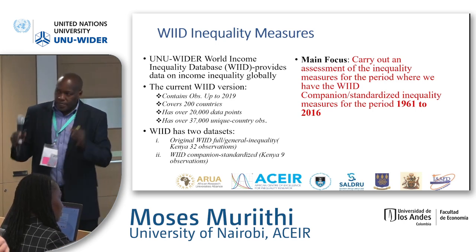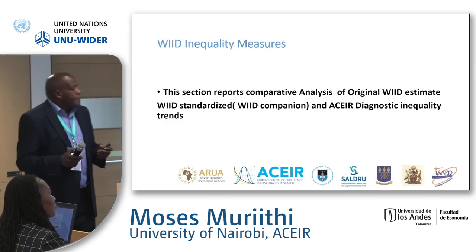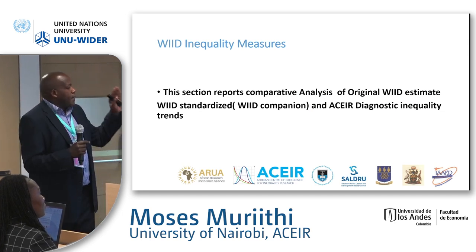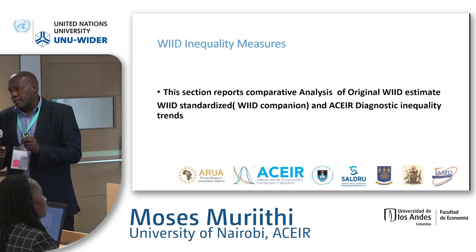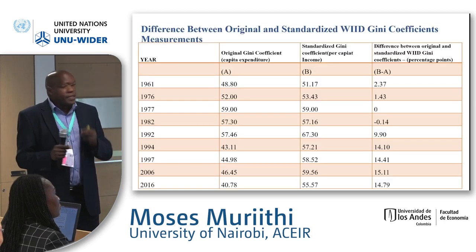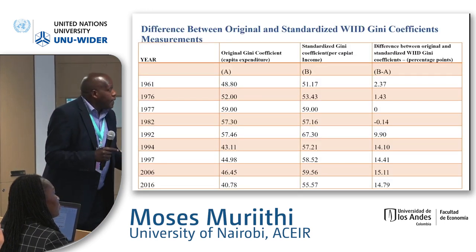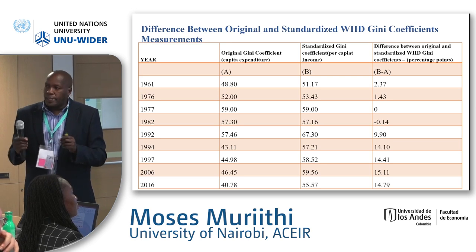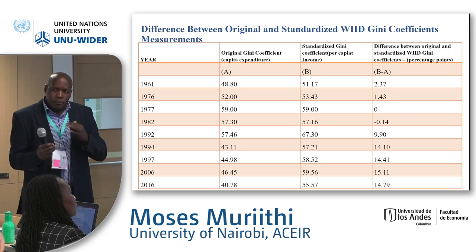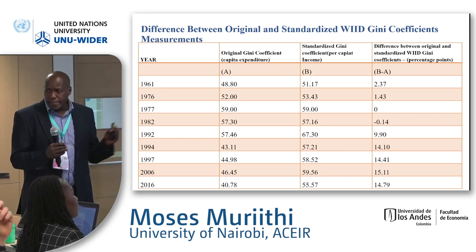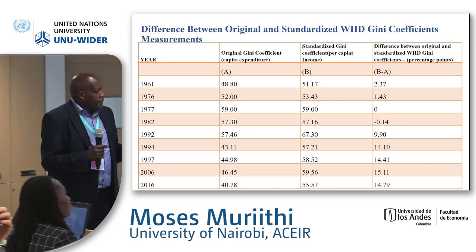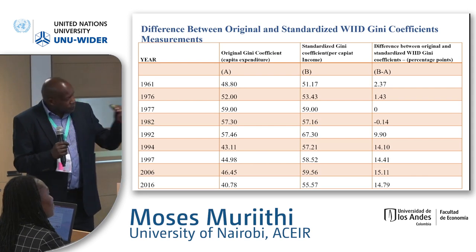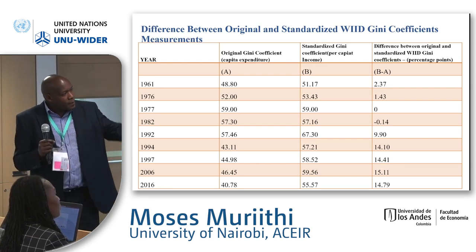Our analysis reports the original WIID estimates and estimates for Kenya as reported by UN-WIDER. The original Gini coefficient from WIID is computed mainly from income per capita, and most datasets come from Deininger and others. We find that the original WIID Gini — the income Gini — is much higher than our consumption Gini from KNBS surveys.